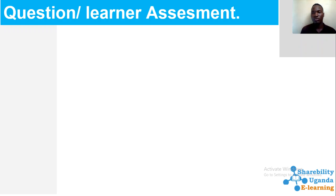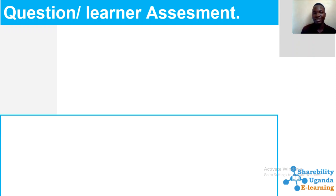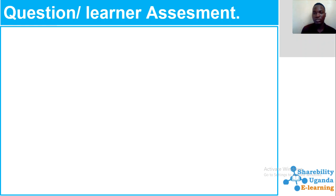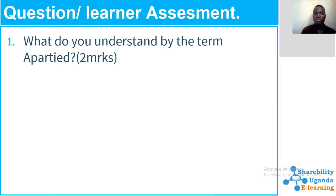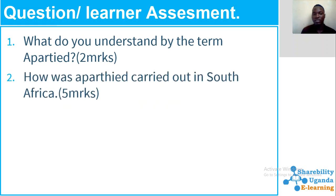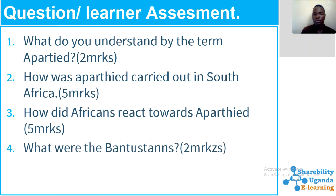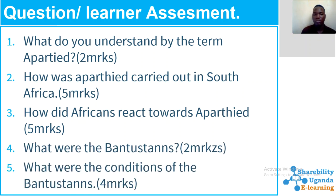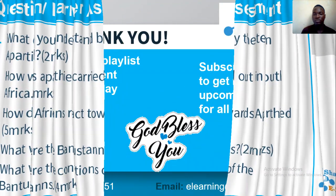Thank you for paying attention. By the end of this lesson you now know something. Please answer these questions and submit them in your classroom. Feel free to contact us. Question one: What do you understand by the term apartheid? — two marks. How was apartheid carried out in South Africa? How did Africans react towards apartheid? What were the Bantu stances? — two marks. What were the conditions of the Bantu stances? — four marks.